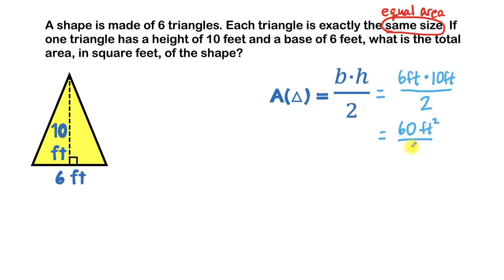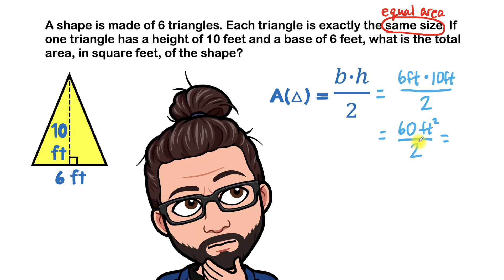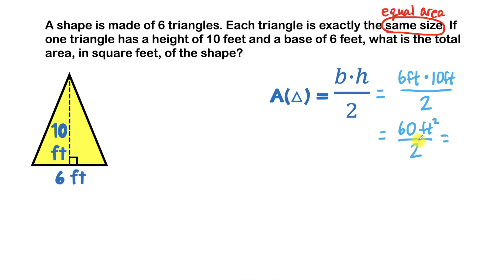And we still have to bring down this line and the two because we haven't used it yet. So we'll put this line here, then the two. So now we've got 60 square feet divided by two, and that equals what do you think? Well, 60 divided by two is 30, so that will be 30 feet squared.